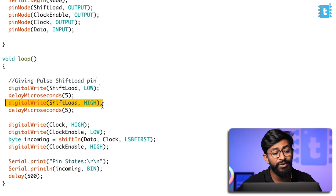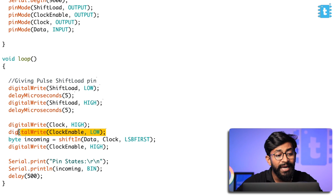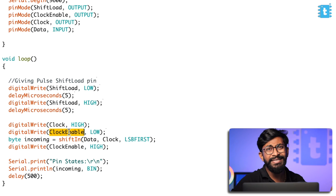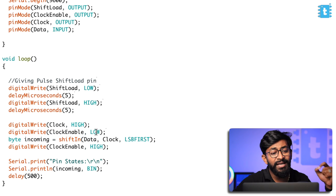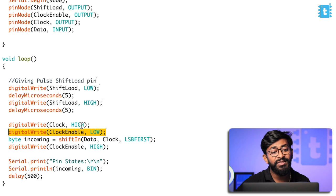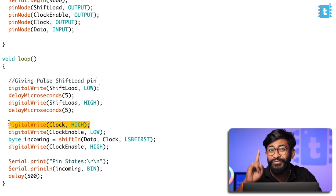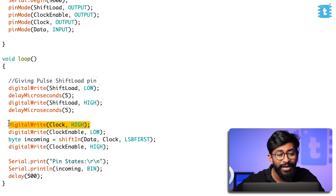After that, we make the clock pin high and the clock enable pin low. The clock enable pin, as the name suggests, enables the clock signal. We make it low because this is an active low pin — so to enable the clock, we set this pin low. We also need to make the clock pin high for the very first time; if we don't do that, we may lose the first data bit inside the byte.